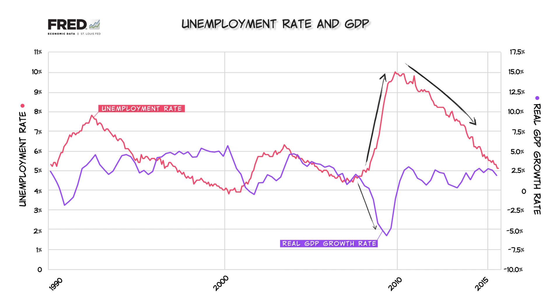The unemployment rate spiked in 2008 as the economy declined. By 2010, the economy was actually growing at a slow but steady rate of around 2% per year, but unemployment didn't return to pre-recession levels for another five years. Why did it take so long for the unemployment rate to return to more normal levels?